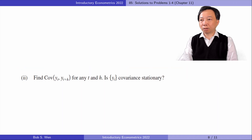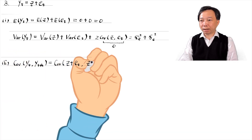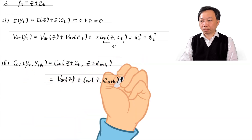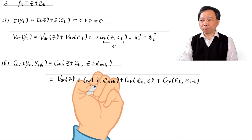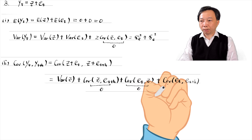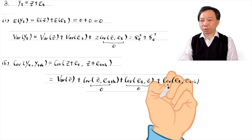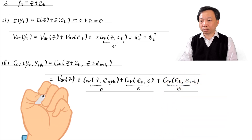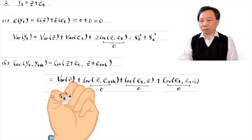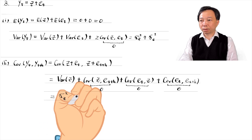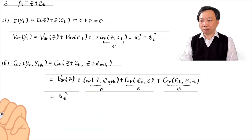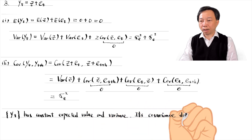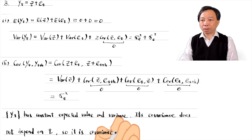In part two, find the covariance between Yt and Yt plus H for any T and H. Is the time series process Yt covariance stationary? We can write the covariance between Yt and Yt plus H into four terms. Because Z is uncorrelated with E in each time period, the middle two terms are zero. The last term is also zero because Et is an IID sequence. So the covariance between Yt and Yt plus H equals sigma Z squared. Since Yt has a constant expected value and variance, and the covariance does not depend on T, it is covariance stationary.